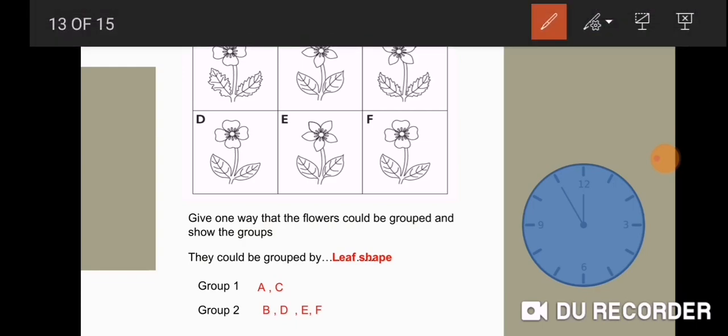Look, group A, this is A and this is C, they have the same leaf shape. And B, D, E, F, they have the same leaf shape.